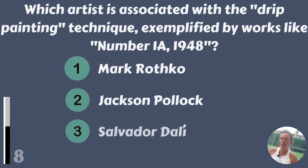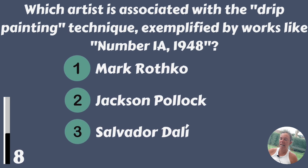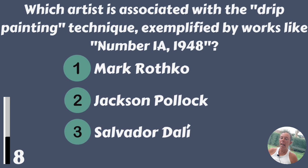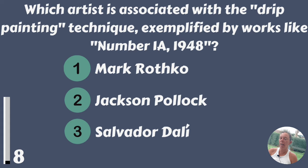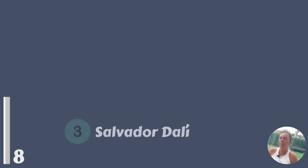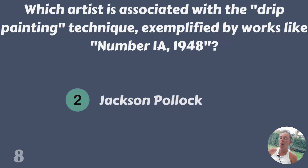Which artist is associated with the drip painting technique, exemplified by works like Number 1A, 1948? Mark Rothko, Jackson Pollock or Salvador Dali? Jackson Pollock.